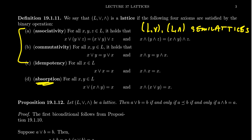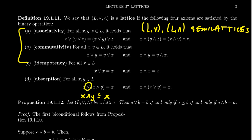To explain absorption, think about the following. The join gives you the least upper bound. So consider x join (x meet y), where x meet y is going to be the greatest lower bound of x and y. In particular, x meet y is less than or equal to x. So if we take the least upper bound between x and something less than x, that's going to be just x itself. Since x is bigger than x meet y, the least upper bound is x. The absorption property captures the fact that we want this partial order to be well-behaved with regard to the two operations.